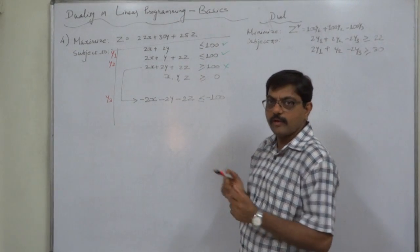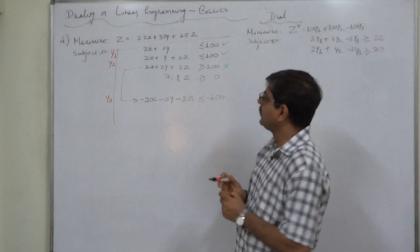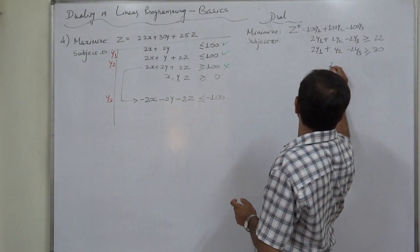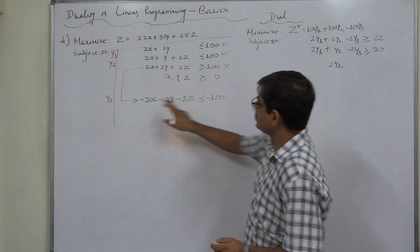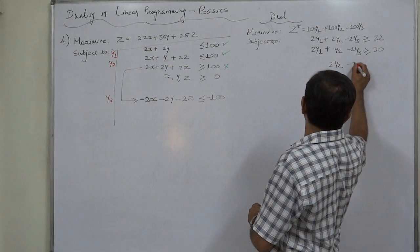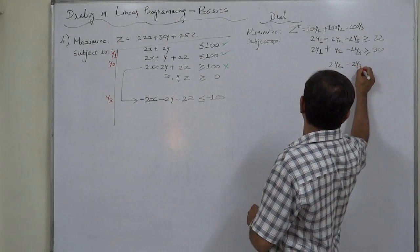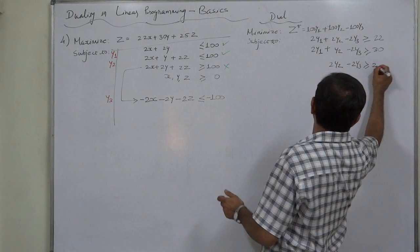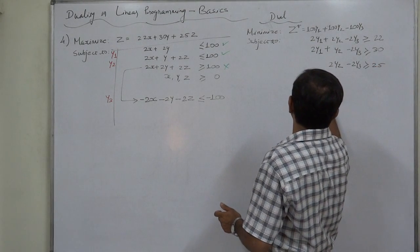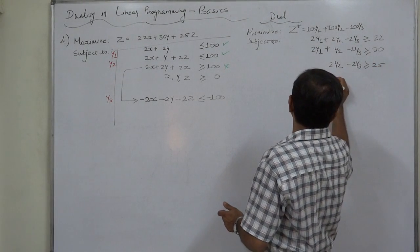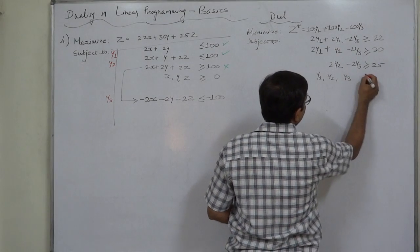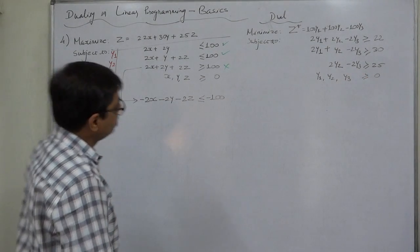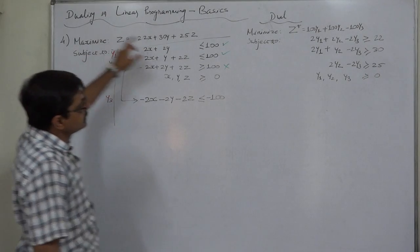The primal variable z gives us the third dual constraint. There is no y₁ term for z, so the coefficient of y₁ is 0. The constraint becomes: 2y₂ minus 2y₃ greater than or equal to 25. And y₁, y₂, y₃ are all non-negative.